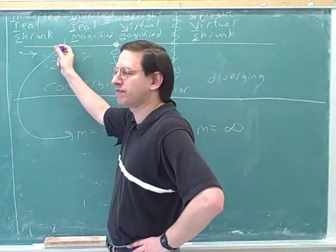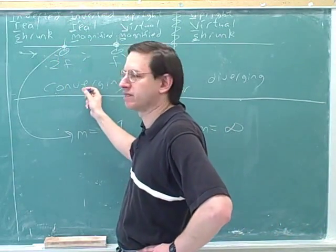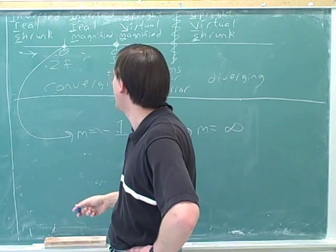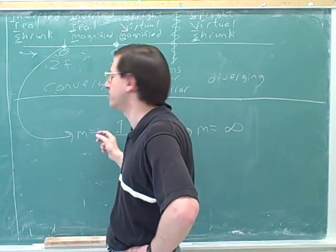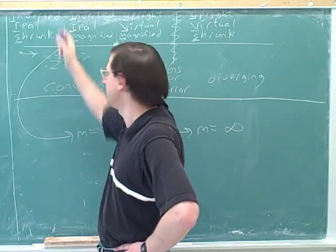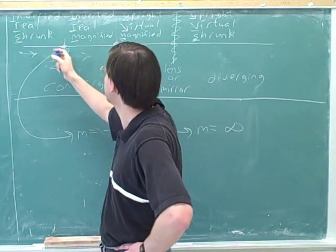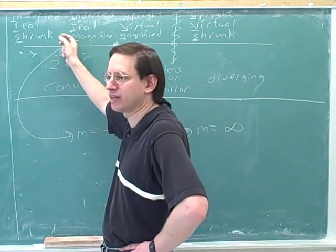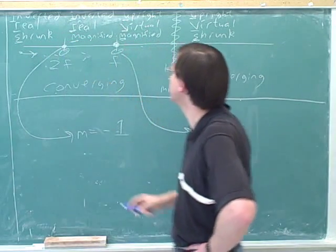If we put the object at twice the focal length for a converging device, it'll have a magnification of negative 1. Negative because it's inverted, and 1 because it's right on the border between shrunk and magnified. So it's the same size.